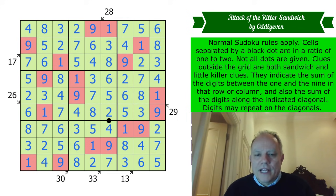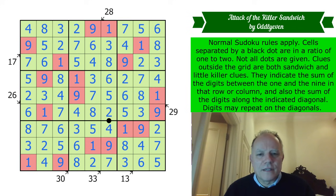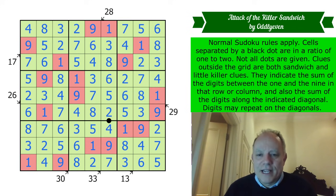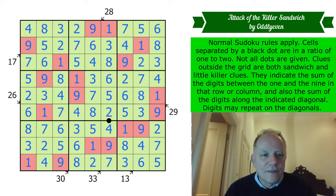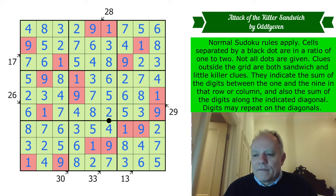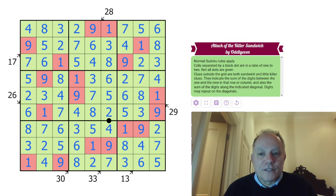Five there, eight there — we finally get the black dot resolved at the very end. Two digits to go. What a lovely puzzle! One of my favorites — I really like how that works, very elegant. Really interesting how the information feeds back and forth. It's great skill by Oddly Even — a fantastic puzzle. Not far off with my time estimate. Thank you so much for watching, hope to see you again soon on the channel. Bye for now!